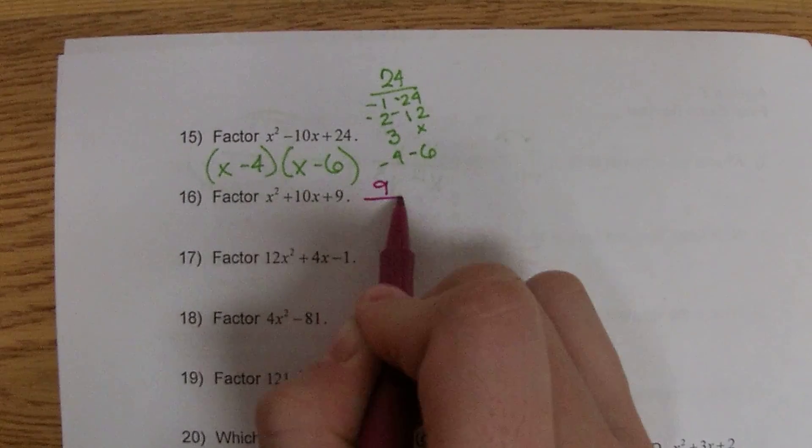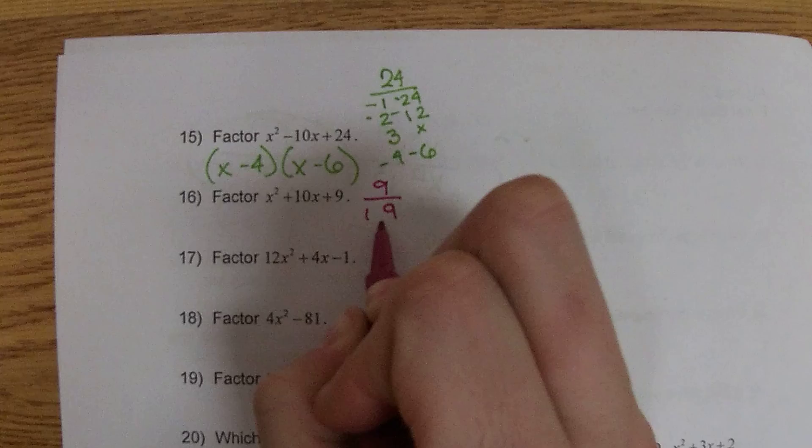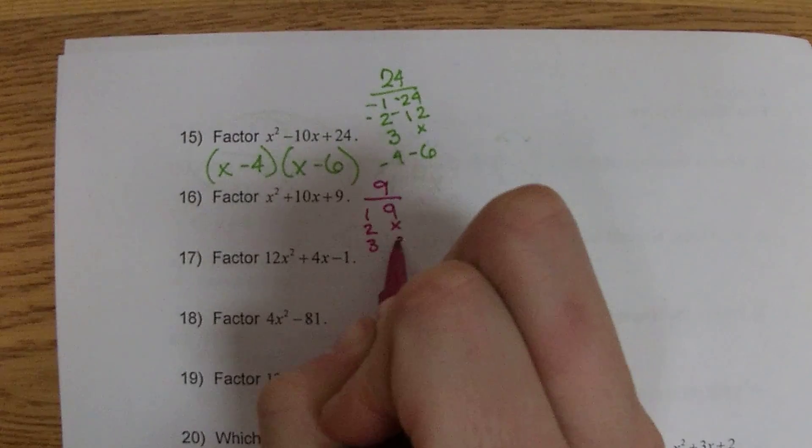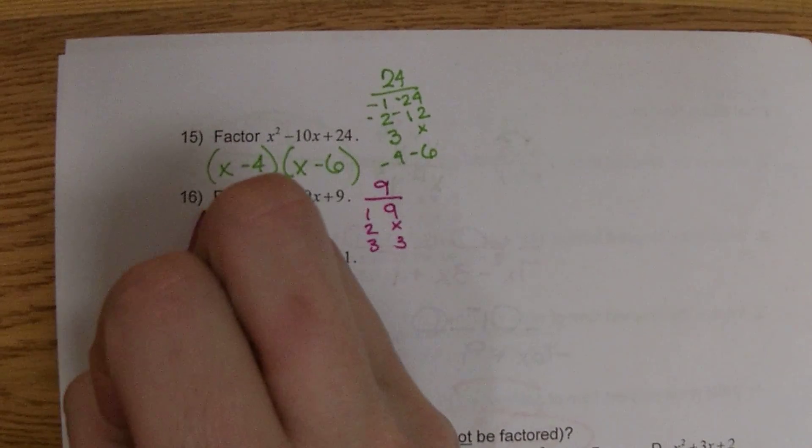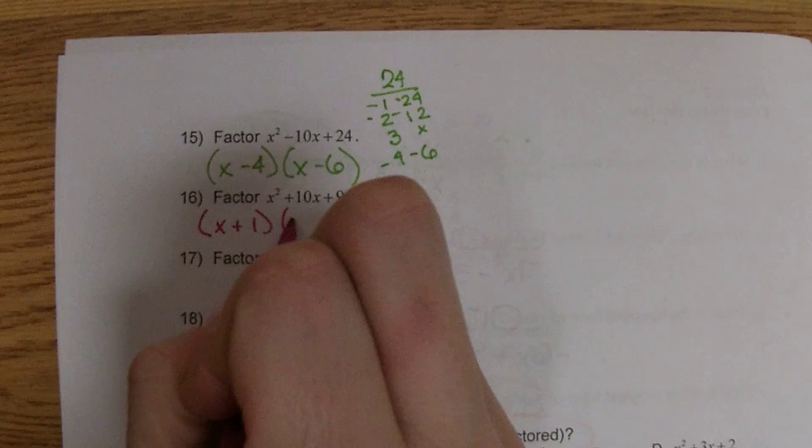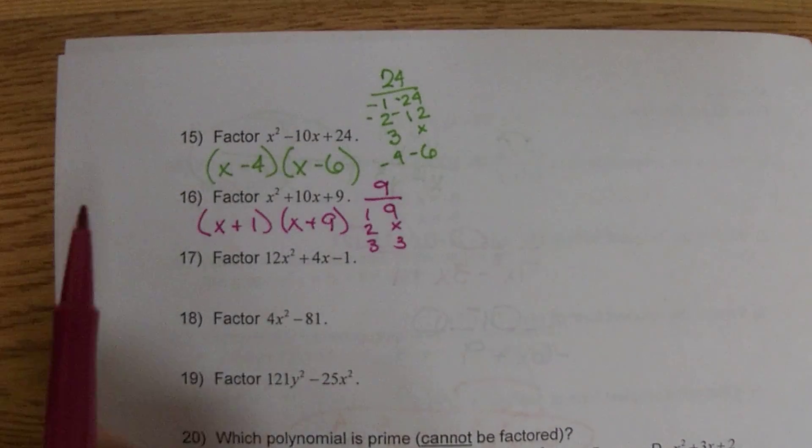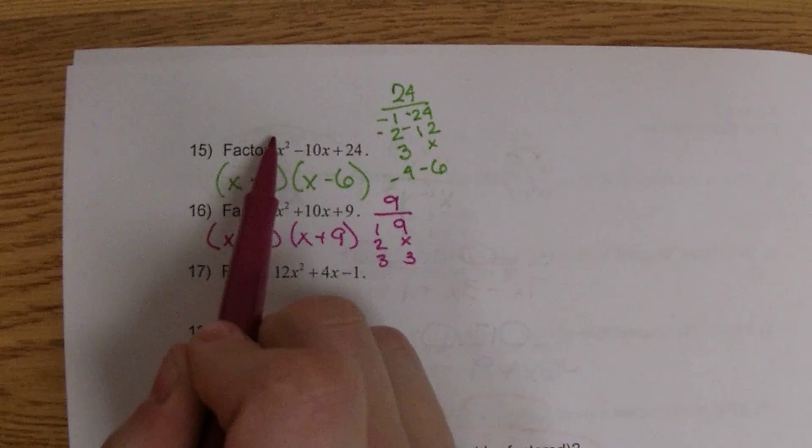16, 1 times 9 is 9. Everything's positive, so we'll pick 1 and 9. So this is x plus 1 and x plus 9. We can use the shortcut because these two have 1s in front.